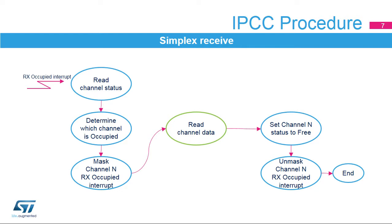Subsequently, the message can be read from the channel data buffer. Once read, the channel status flag is cleared to free or flow-on, and the channel-occupied interrupt is unmasked.